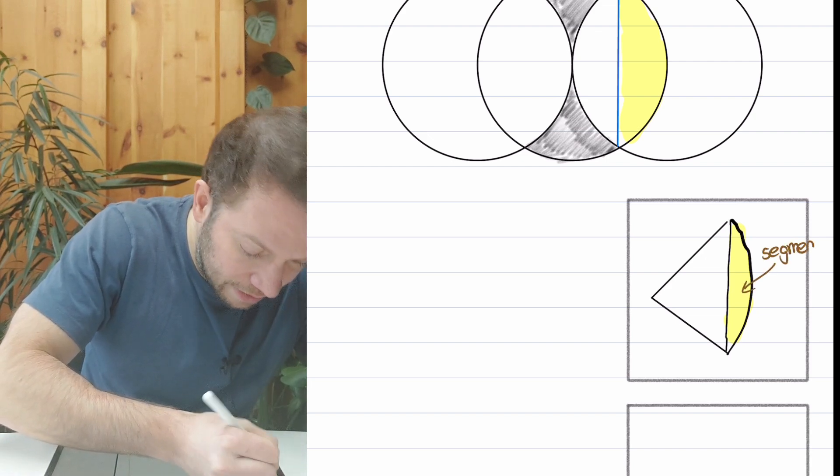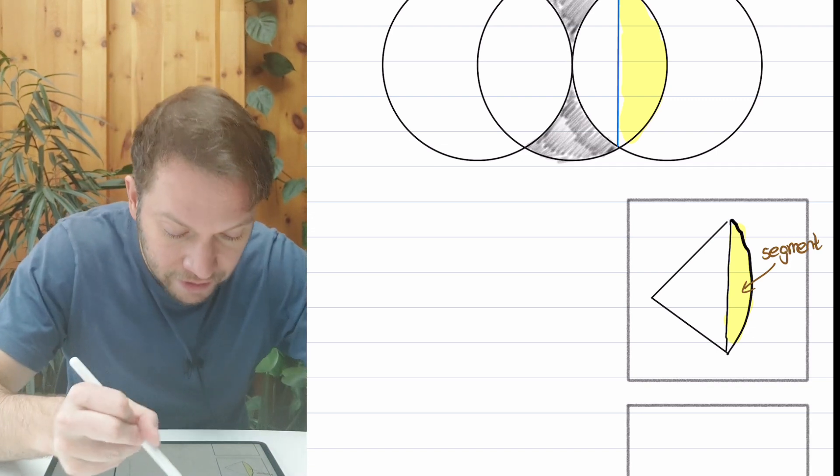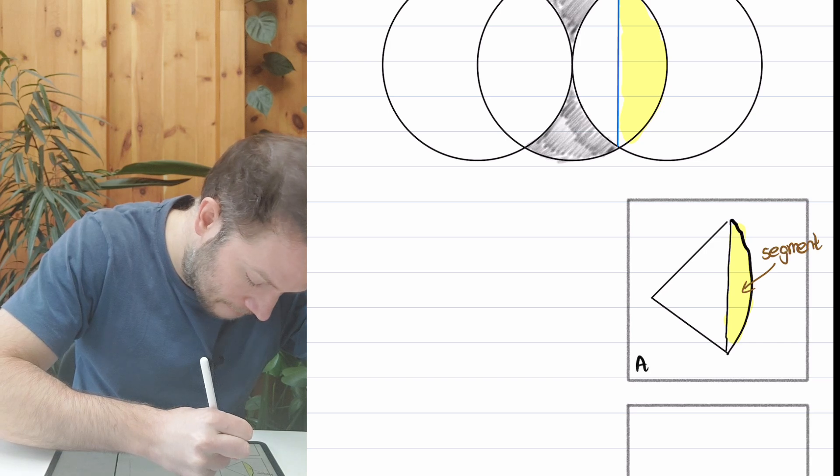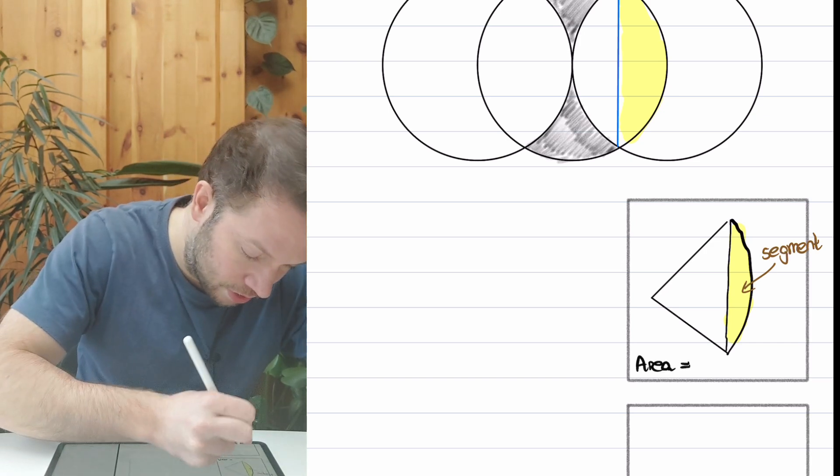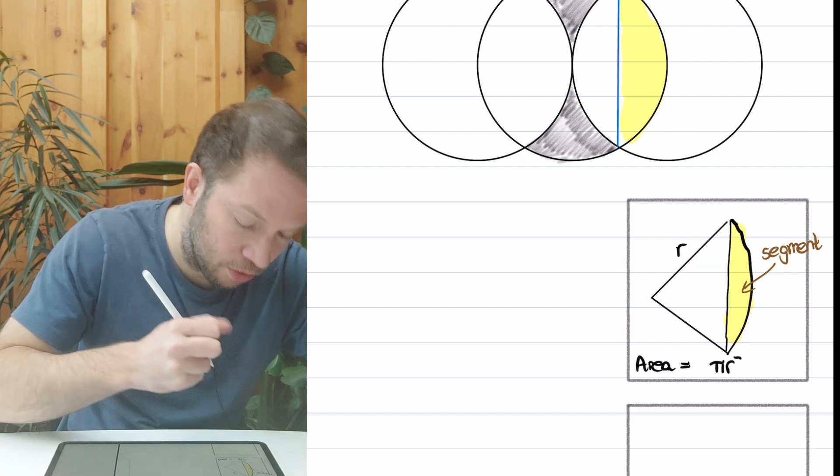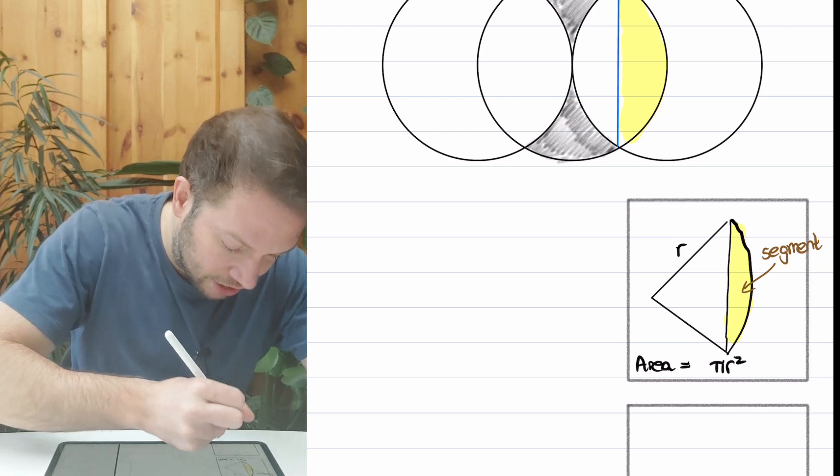So how do you find the area of a segment? You start with the area of the pizza slice and then you cut out that triangle on the left. So the area of the pizza slice: you start with the area of a circle—where this is radius r—we start with the area of a full circle, and then we're going to find the appropriate fraction of the full circle.